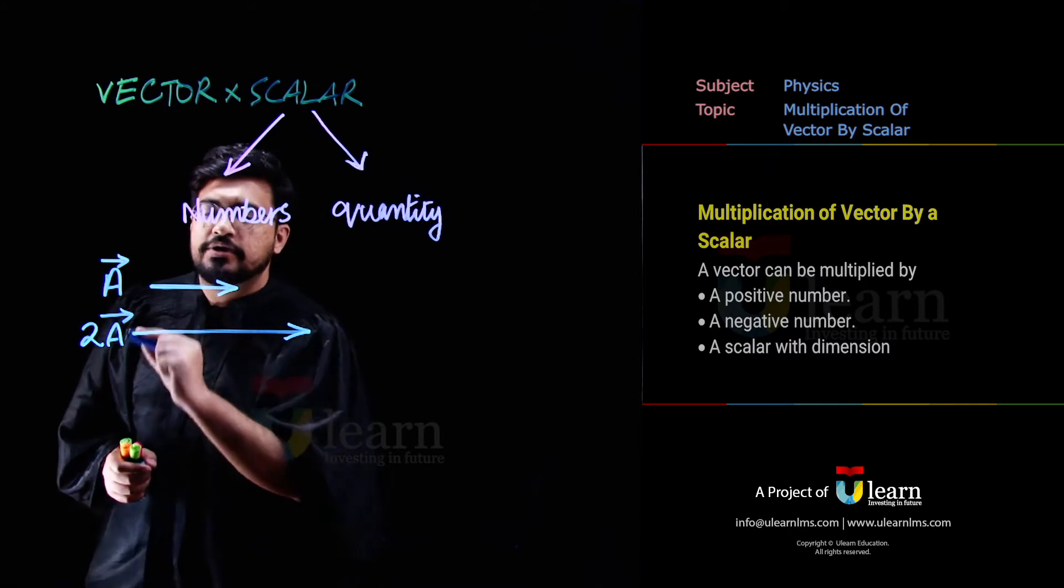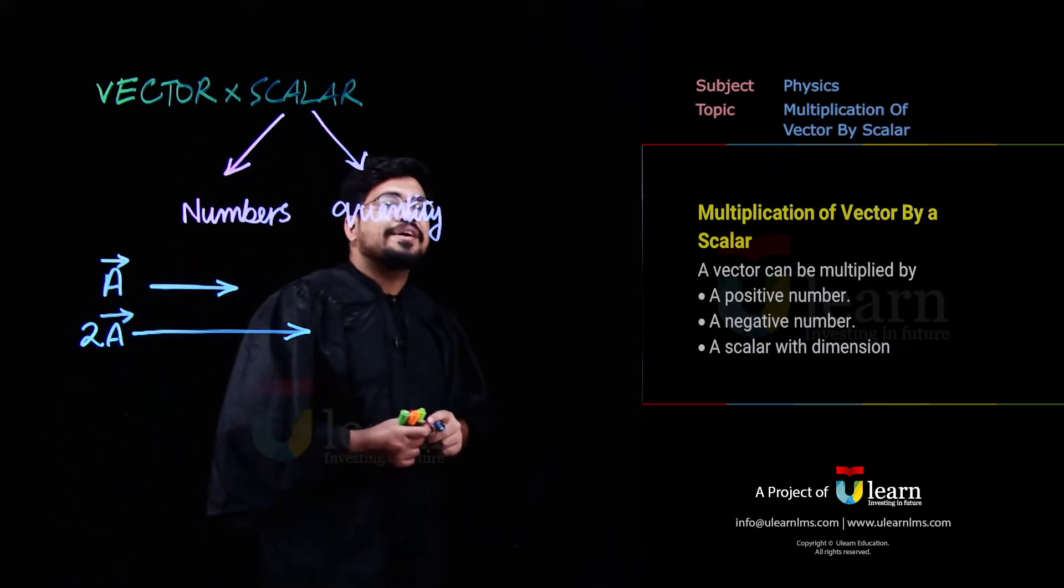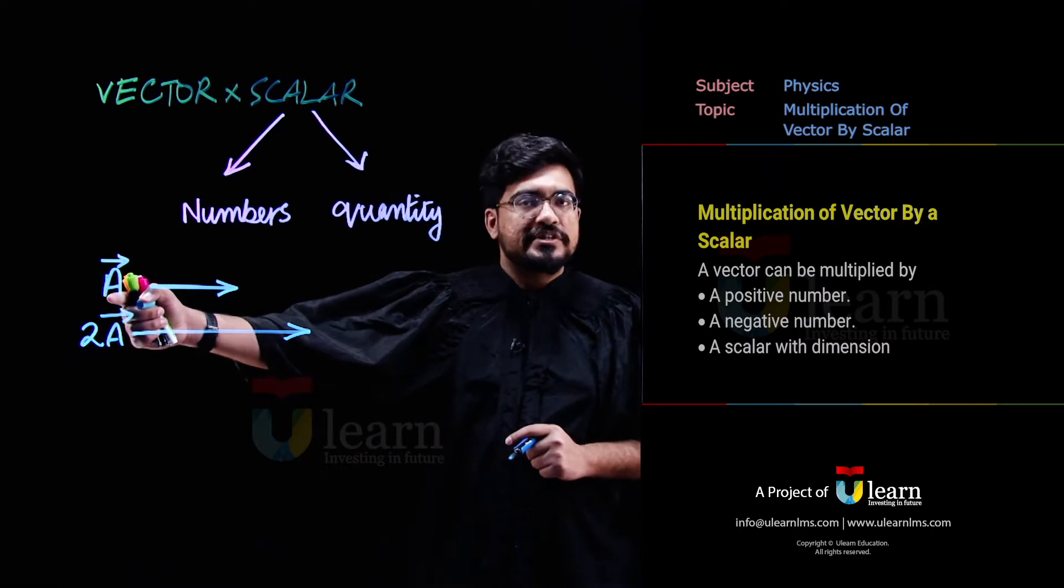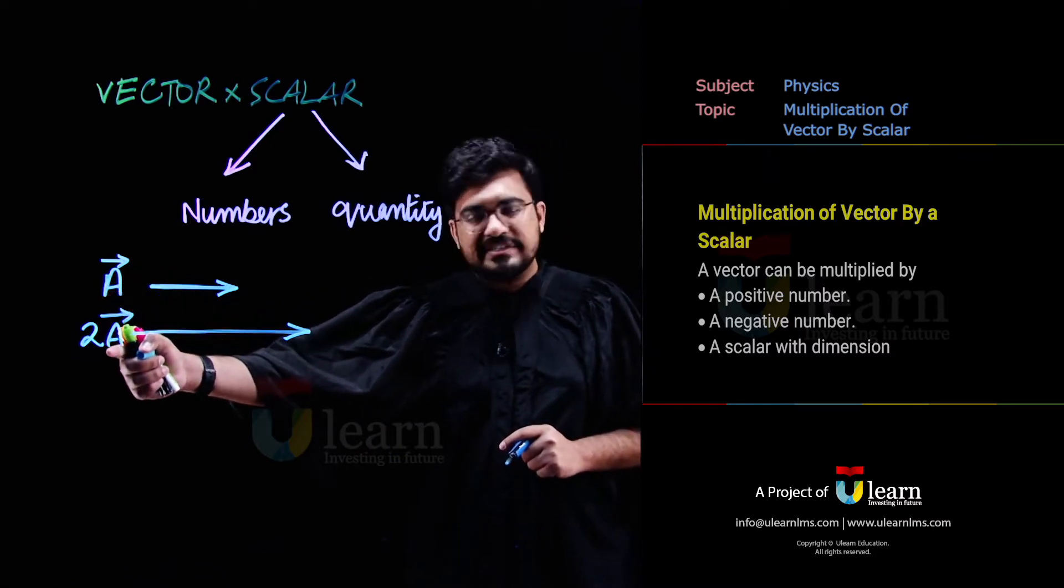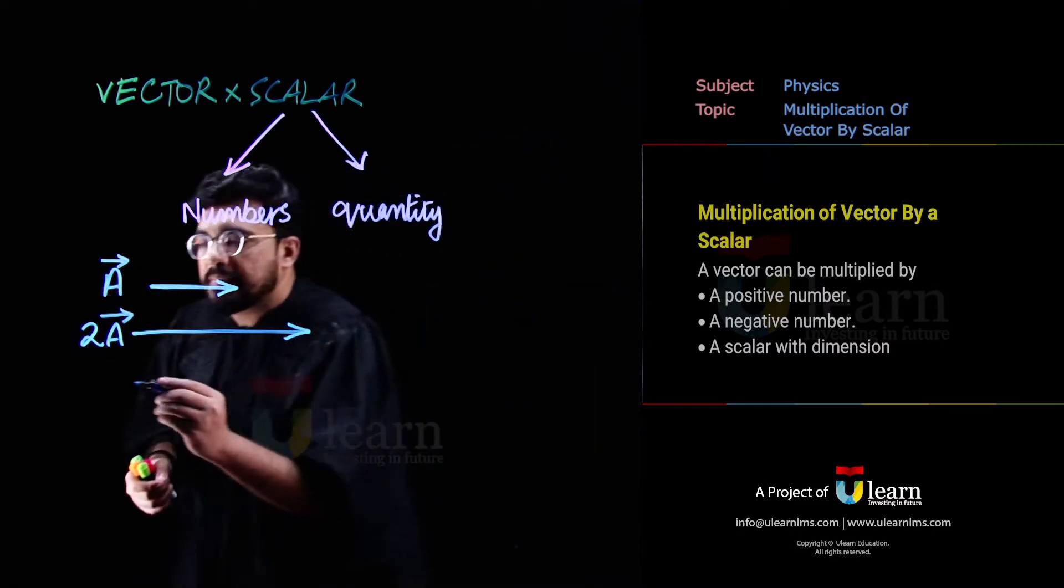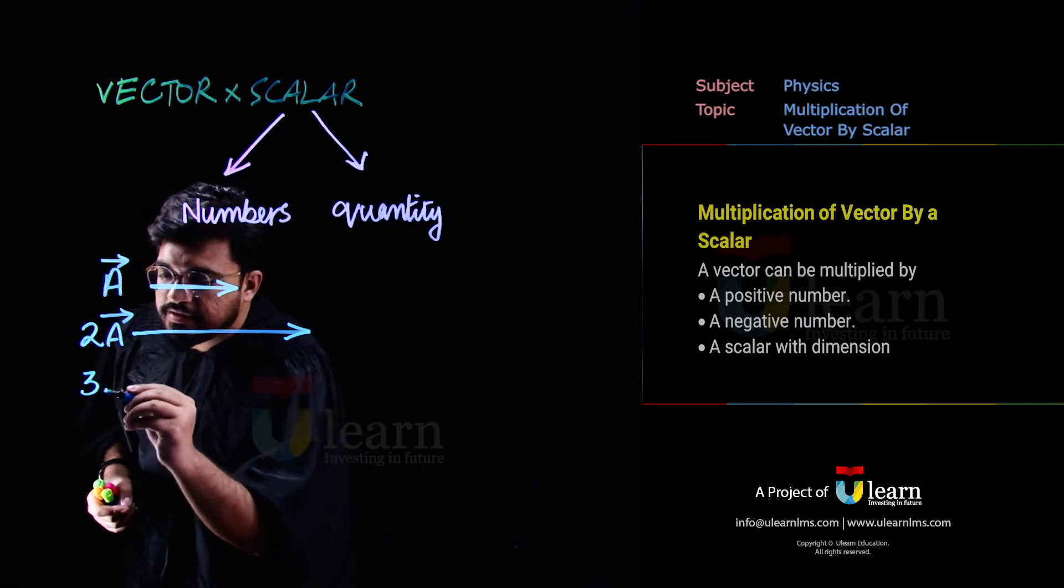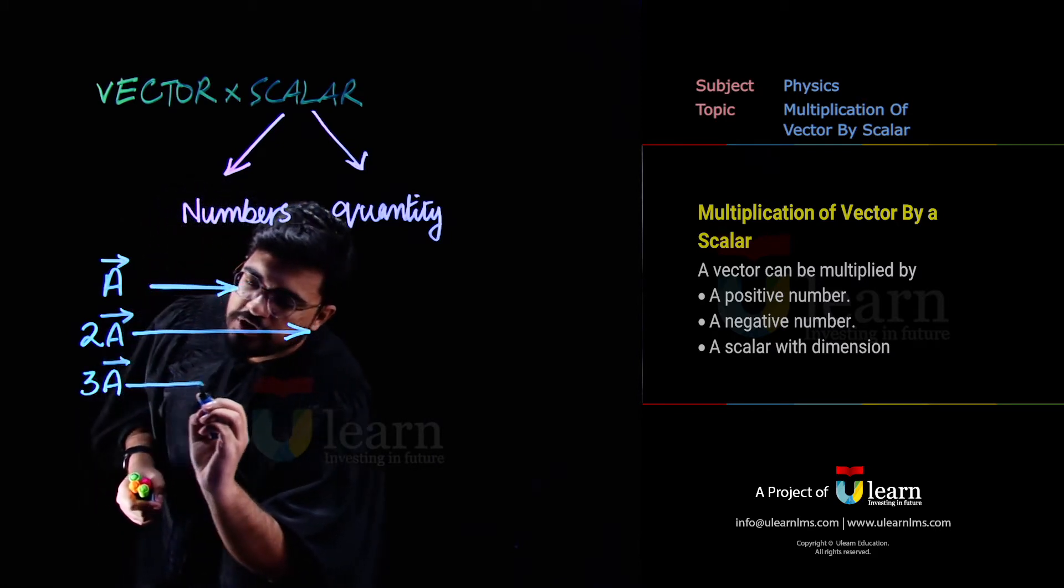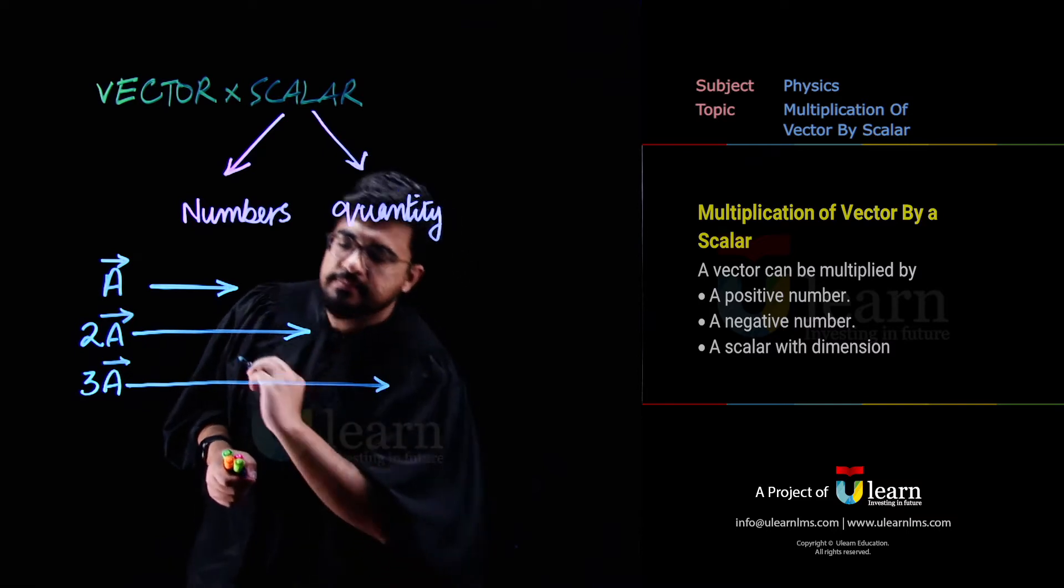Ye a hai, toh ye 2a hai. Aur koi fark nahi padega. Agar ye vector force vector tha, toh ye force double ho gi. Agar aap isko number 3 se multiply kare ho ge, toh ye force 3 times ho jayegi aur vector ki magnitude bhi 3 times ho jayegi.